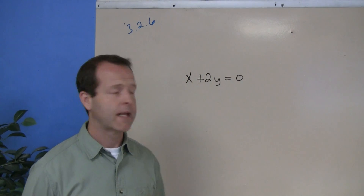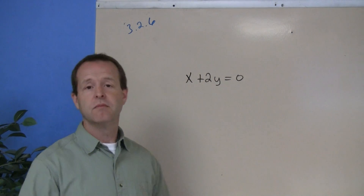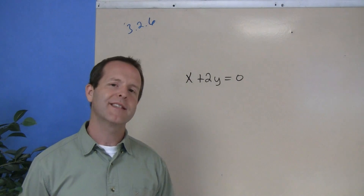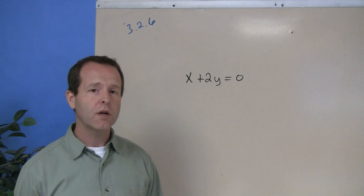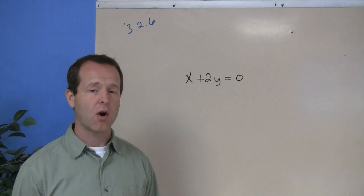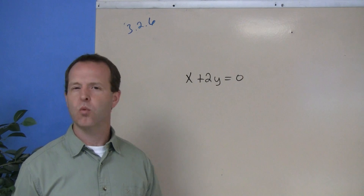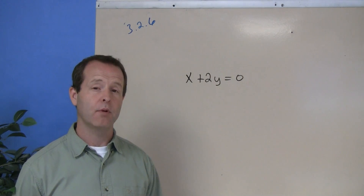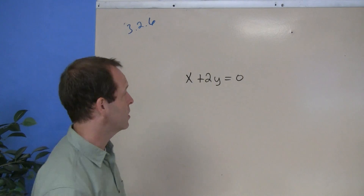Sometimes we're going to see equations that look like x plus 2y equals 0. In this case, we know that the origin is part of the graph. But the origin is just one point — I need to find a couple of other points to determine what the graph looks like.